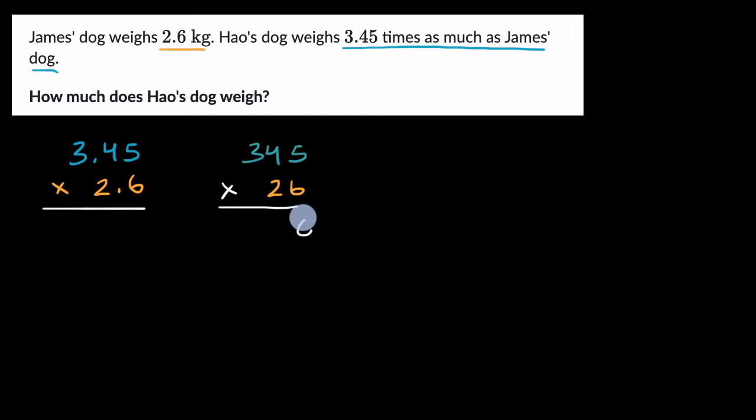So five times six is 30. Four times six is 24, plus three is 27. Three times six is 18, plus two is 20.